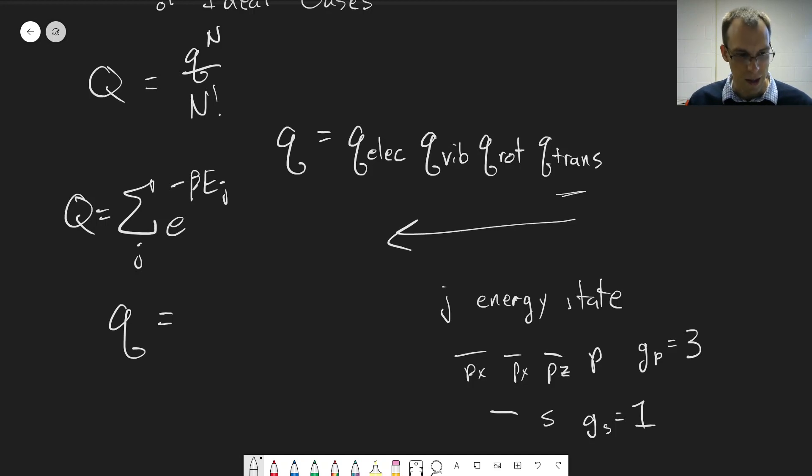let's add up instead of for each j, which is each energy state, let's look at each energy level, meaning all the levels that have the same energy and then multiply by the degeneracy of that level.